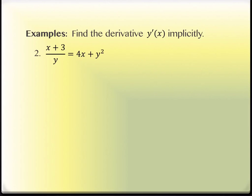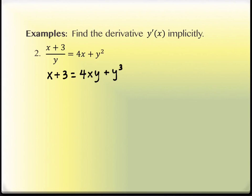Alright, let's try some more. Looking at this next problem — you notice that you've got a quotient on the left, which would mean if I do the problem as written, I have to use a quotient rule. But do I have to? No. What would be nicer is to multiply by y — write this as x plus 3 equals 4xy plus y cubed. In doing so, we got rid of the quotient on the left, but now we have a product on the right: 4xy is a product.